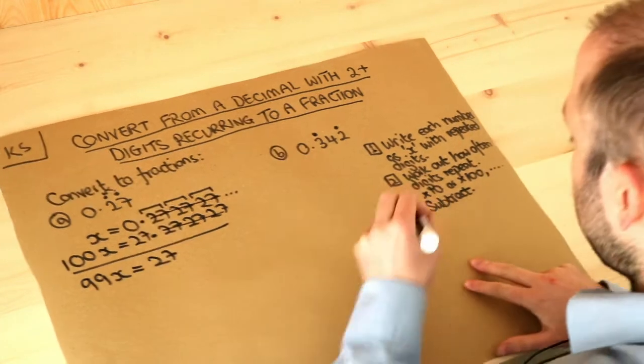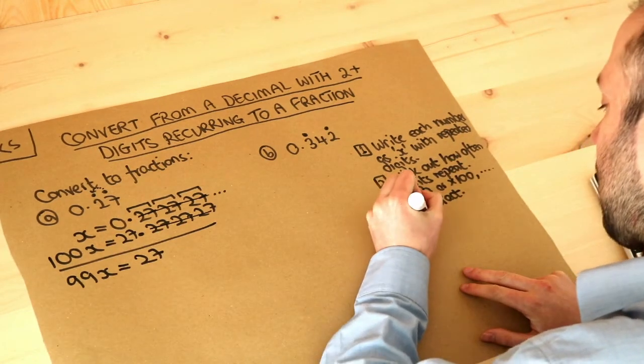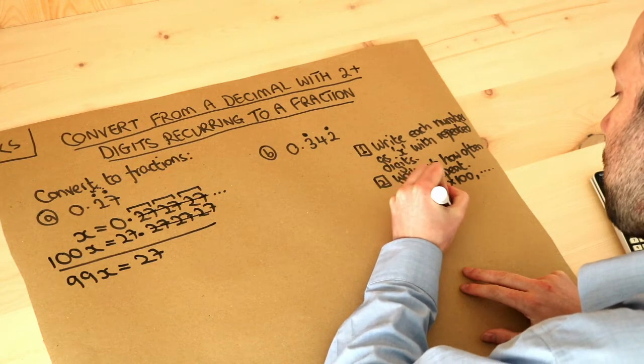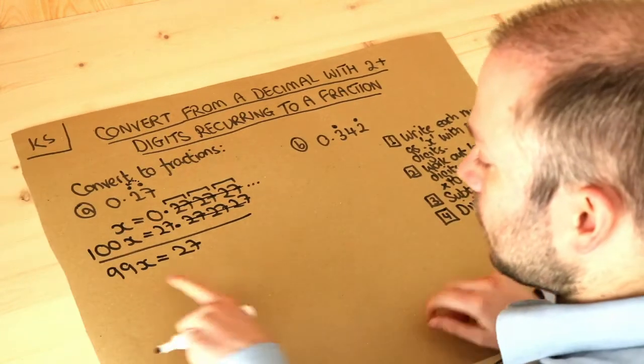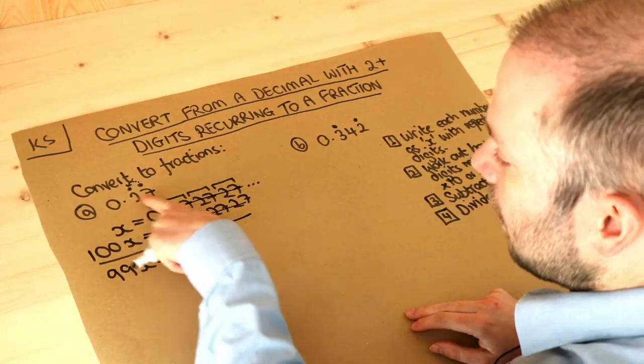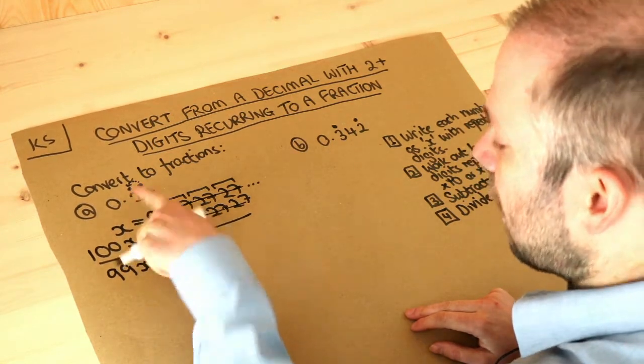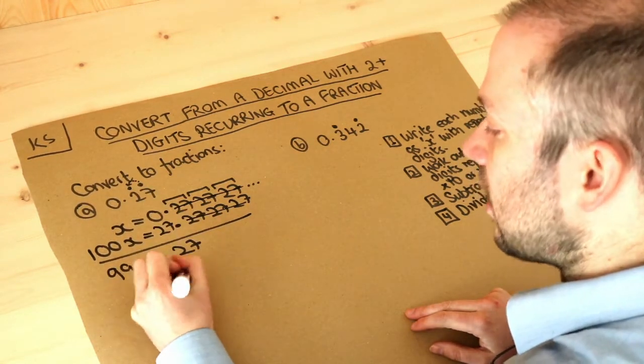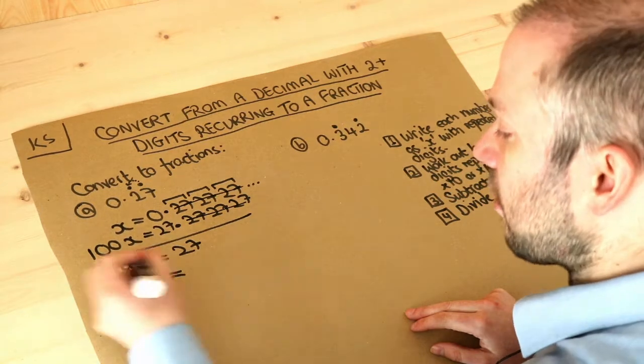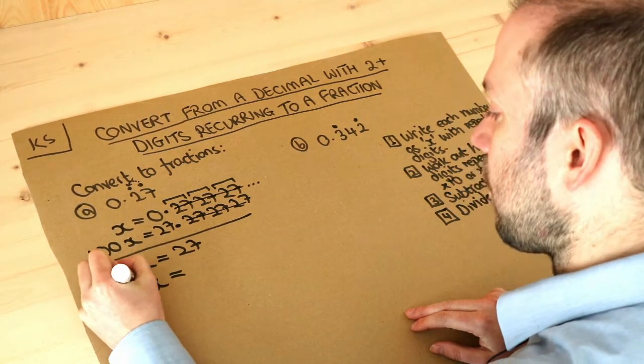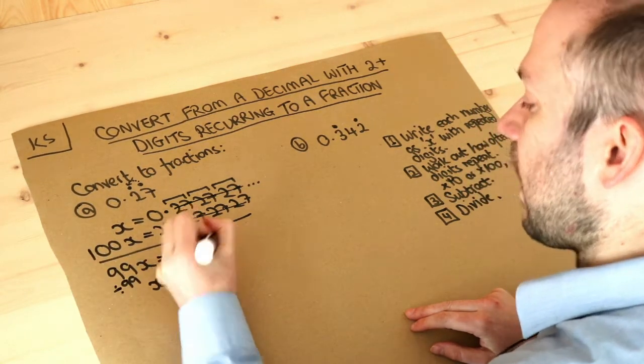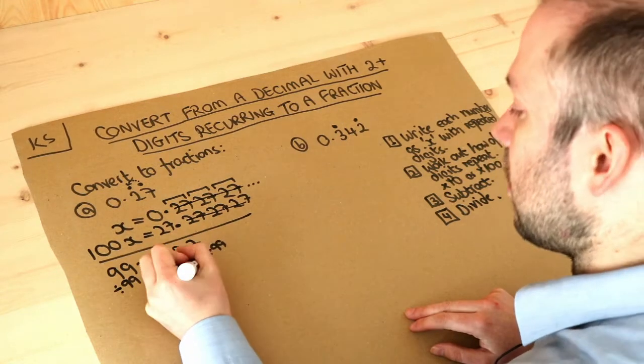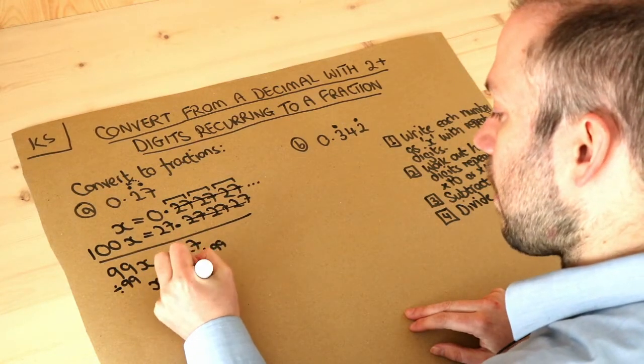And then finally, I should add the extra step here, we just divide appropriately. So we want to get x on its own because this number here is x, we want to work out what x is. Now to get rid of that 99 in front of the x, we divide both sides of the equation by 99. And if we do that, we get 27 over 99, and that is actually the final answer.